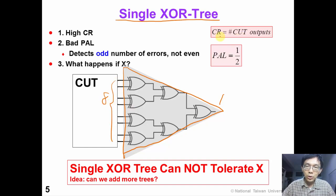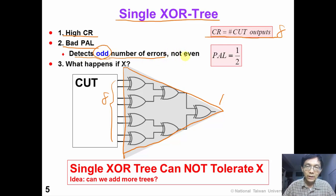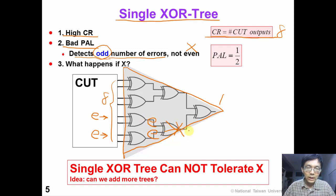So the compaction ratio is the number of CUT outputs, which is 8 in this example. This is a very simple idea and the compaction ratio is very high. However, this single exclusive-OR tree is very bad in terms of aliasing — we can only detect odd numbers of errors. We cannot detect even numbers of errors. For example, suppose we have one error coming in here and another error coming in here; eventually they would cancel out so we cannot observe any error.